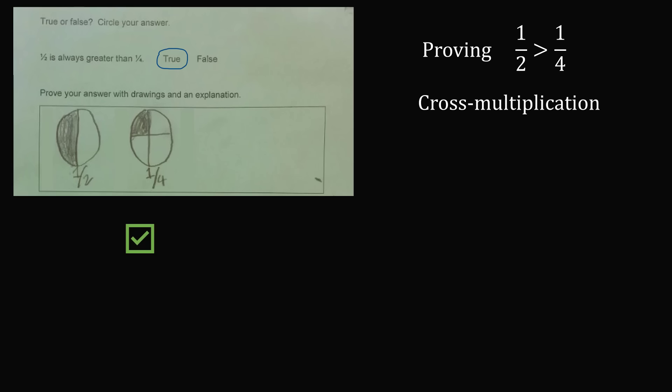Another method that has been used since ancient times is cross multiplication. So we have 1 over 2 and 1 over 4. Take the denominator of 1 over 4 and multiply it by the numerator of 1 over 2. So we have 4 times 1, which is equal to 4. Then, do the cross multiplication. So we have the denominator 2 multiplied by the numerator 1, which is equal to 2. Now, of course, 4 is greater than 2, and this sign will continue to the original numbers. So we have 1 over 2 is greater than 1 over 4.